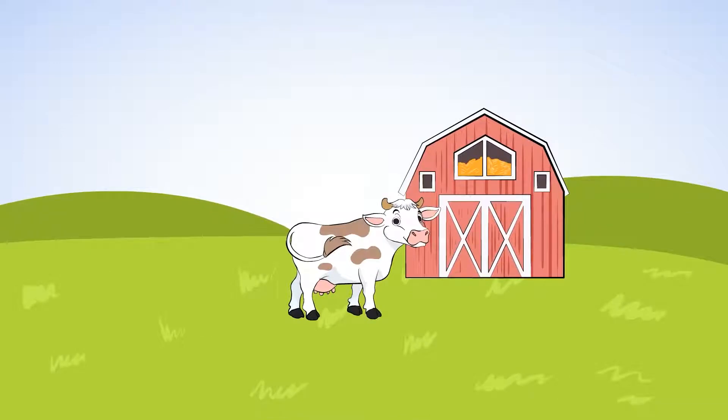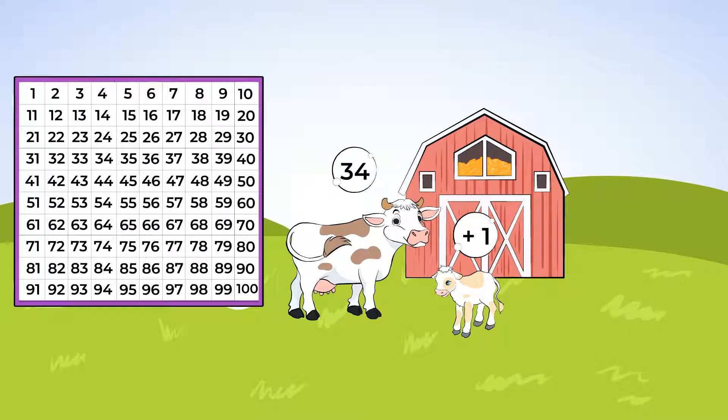Farmer Ben has lots and lots of cows. But it looks like they're already in the barn. Farmer Ben counted all of his cows and he has 34 cows. But one just had a baby. And it looks like Farmer Ben is going to need to count his cows again. Luckily for him, we're here to help. We can use our hundreds chart to find out how many cows Farmer Ben has. Let's take a look.